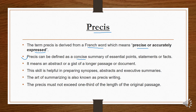Précis can be defined as a concise summary of all essential points, statements and facts. We have a lengthy paragraph, and we have to write it in a concise way, but the main theme is also present in the small paragraph. Many times we read a paragraph and then we make a précis — a shorter paragraph.